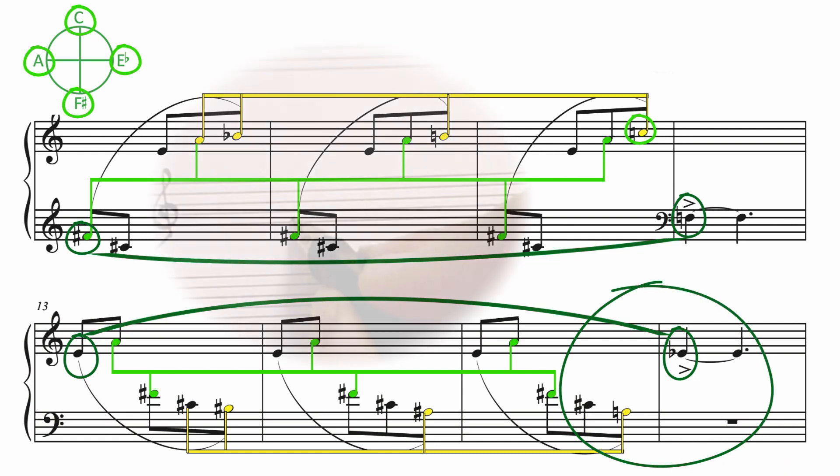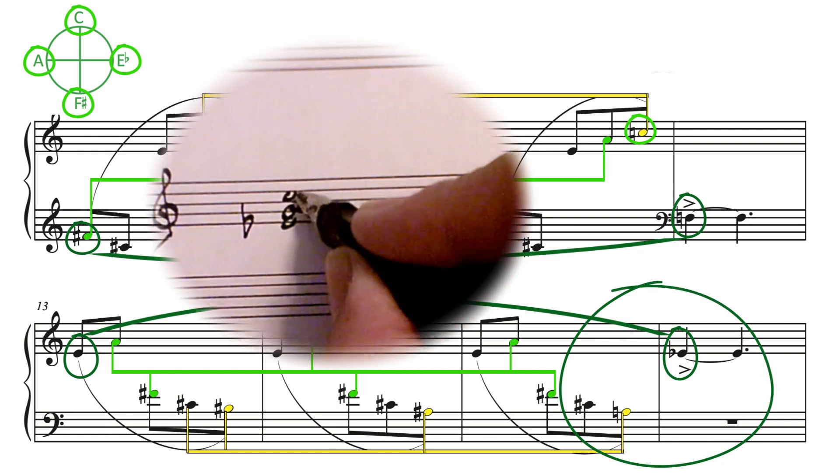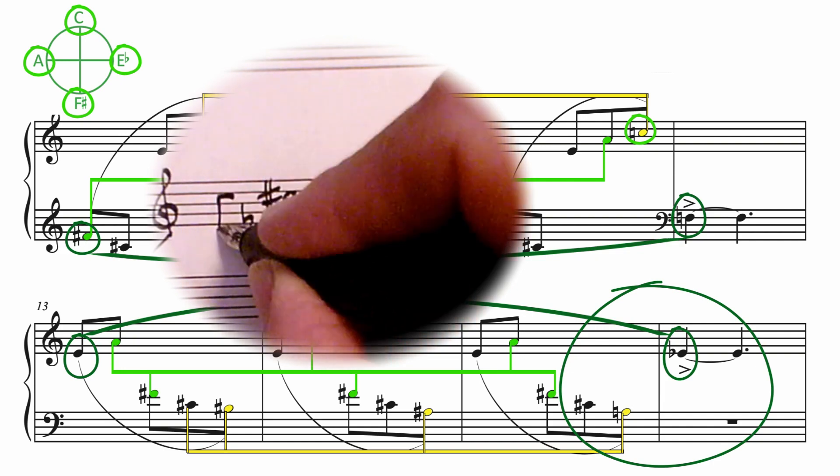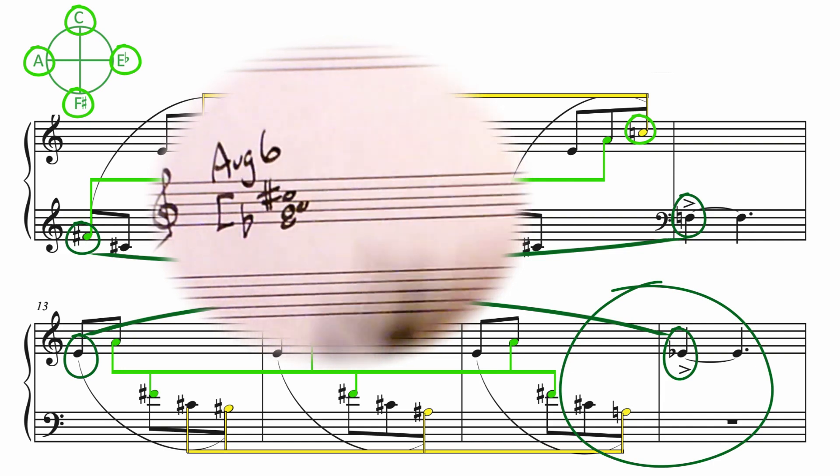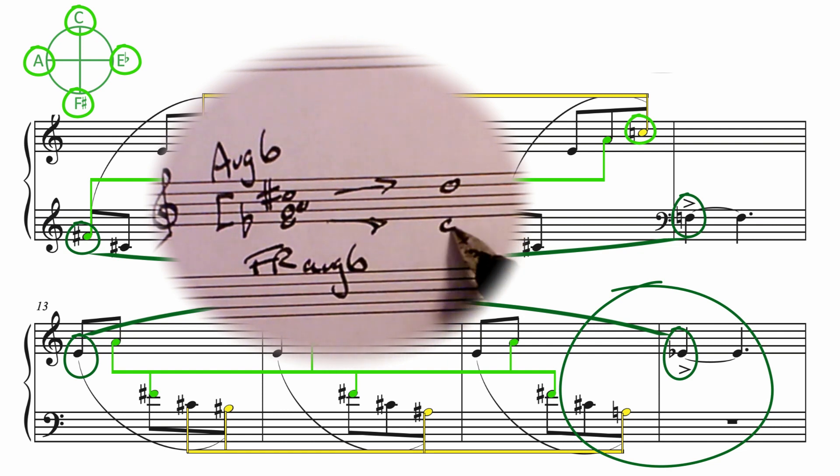Interestingly, it also hints at a collection of notes that are familiar in traditional harmony, the French augmented sixth chord: E flat, G, A, C sharp, but without the G, and also inverted. This is a very traditional way to get to the dominant, which is coming right up in measure 17.